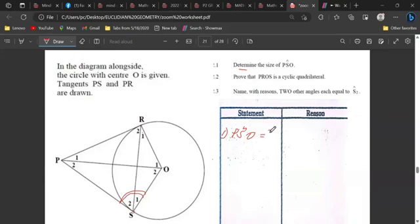90 degrees. It's 90 degrees, this one. What is the reason why this is 90 degrees? Tangent perpendicular to radius. So it's because we have a tangent perpendicular to radius.